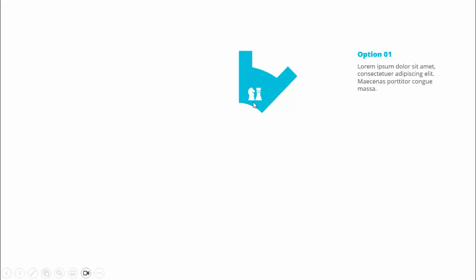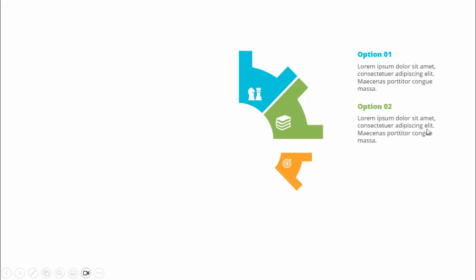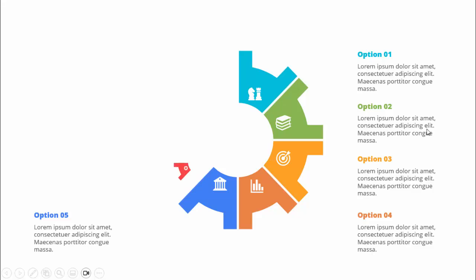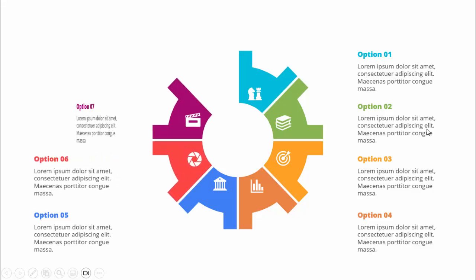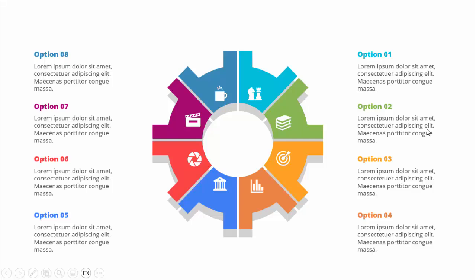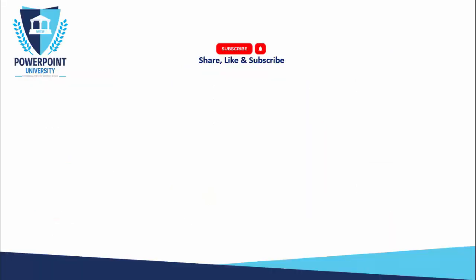In today's tutorial I'm going to show you how to create an eight options infographic slide in PowerPoint. When I click it will show option one where you can add the icon, the option number, and the detail text. When I click again it shows option two with a different color, option three, option four, option five, option six, seven, and option eight.